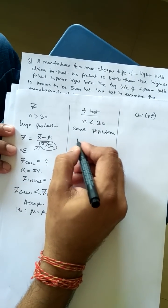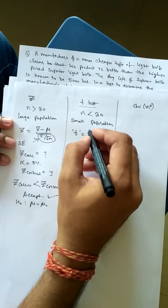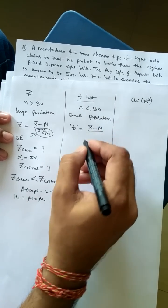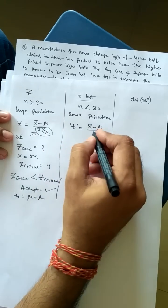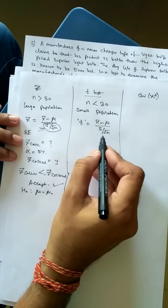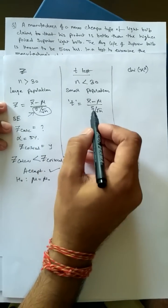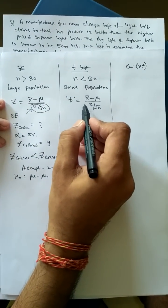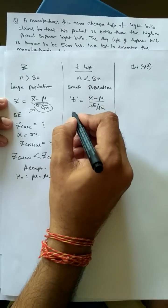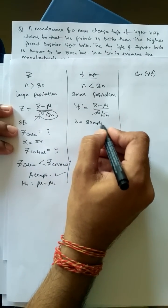In the T test, the test statistic is calculated using the formula: x-bar minus mu, divided by S by root n. The only difference between the Z and T formulas is that in the T test, sigma is replaced with S, the sample standard deviation.